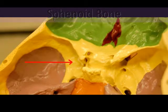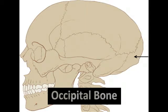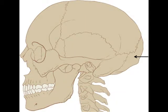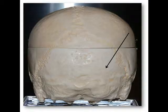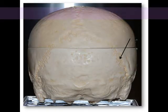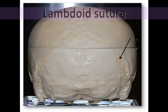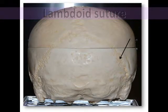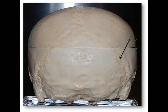The occipital bone is the cranial bone located at the back of the head. It forms the posterior and most of the base of the cranium. From this posterior view, you can see how the occipital bone fuses with the two parietal bones at the lambdoid suture. This suture is referred to as lambdoid because its shape resembles the Greek letter lambda, which resembles an upside-down letter V.